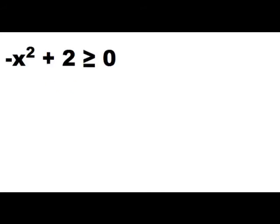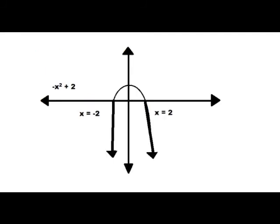We solve for negative x squared plus two greater than or equal to zero. We divide by negative one to get x squared positive — but since we're dividing by a negative, the sign switches. So we get x squared minus two less than or equal to zero. Just shade everything less than zero and you're good. We did it — we learned some math.